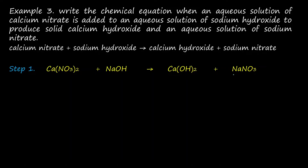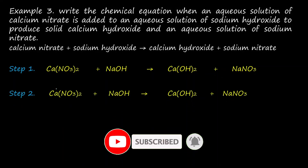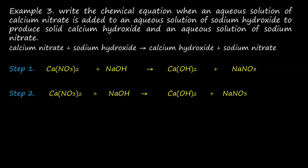The second step is to place the total valence of each atom above it. The total valence for calcium in calcium nitrate is 2. For nitrate in calcium nitrate, the valence of nitrate is 1 but there are 2 atoms, so 2 times 1 equals 2. The valence of sodium in sodium hydroxide is 1. The total valence for the hydroxide ion in calcium hydroxide: one hydroxide ion has valence 1, but here there are 2, so 2 times 1 equals 2.